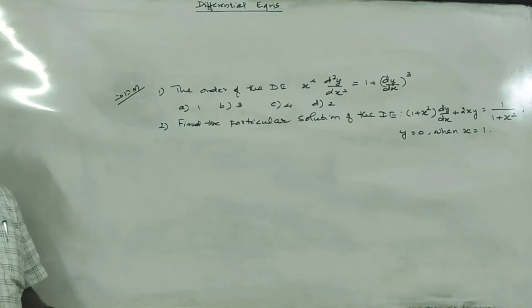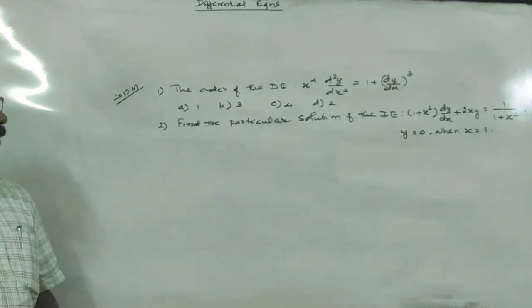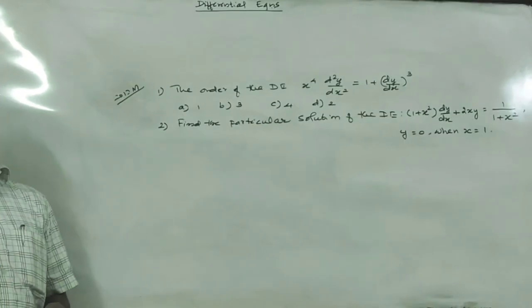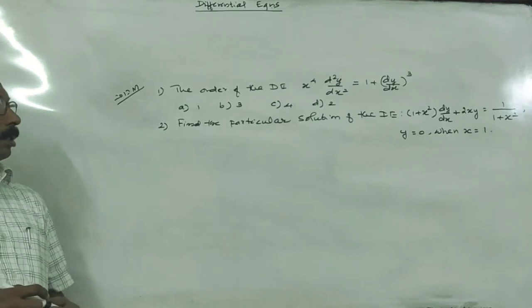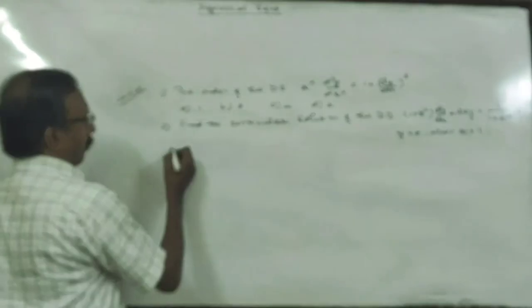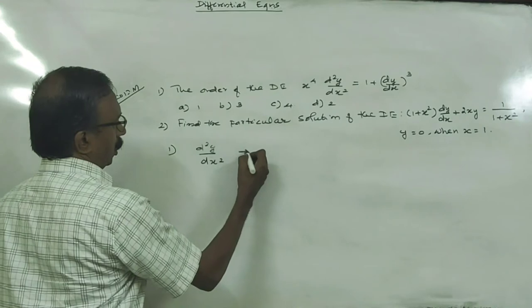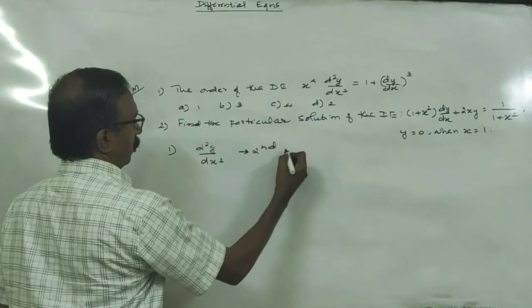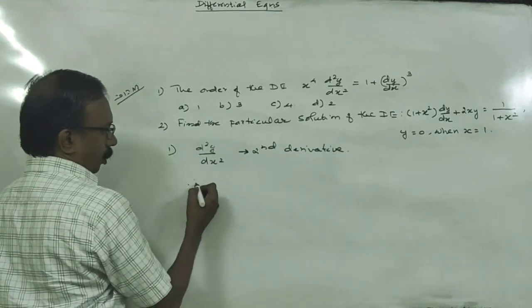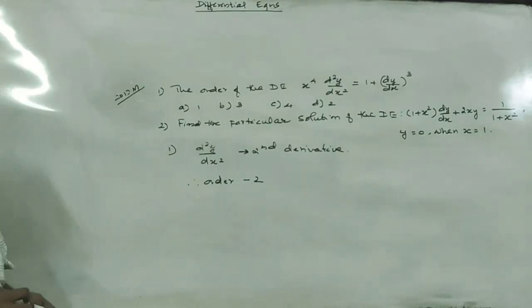In 2017 March, the first question: find the order of the differential equation x⁴ d²y/dx² = 1 + (dy/dx)². The order of the differential equation is the order of the highest derivative. Here the highest derivative is d²y/dx², which is the second derivative. Therefore, order is 2.